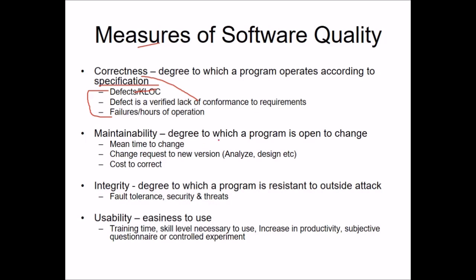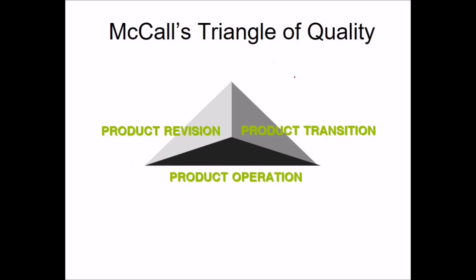Correctness can be computed by defects per KLOC and failures per hours of operation. Maintainability is the degree to which a program is open to change, measured by mean time to change, cost to correct, and change request to new version. Integrity is the degree to which a program is resistant to outside attack, computed via fault tolerance, security, and threat measures. Usability covers training time required, skill level necessary, and productivity increase.